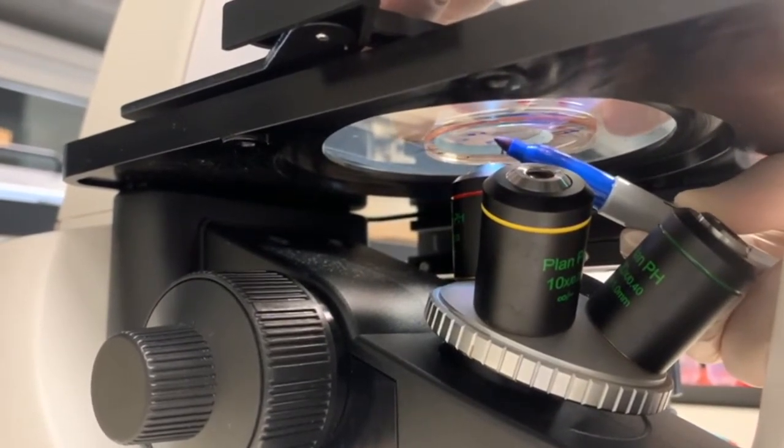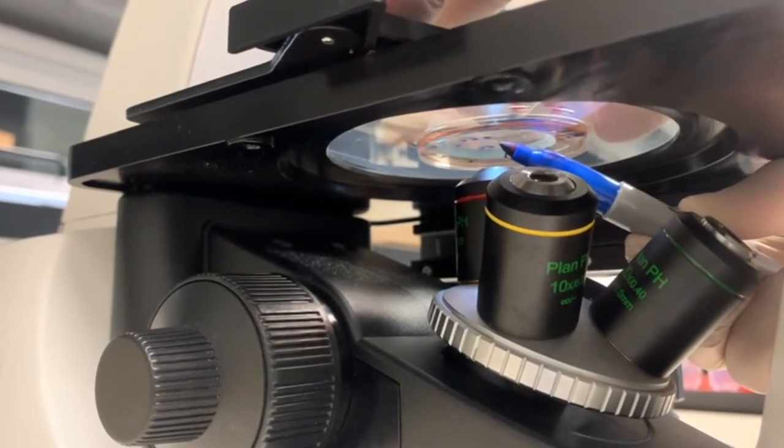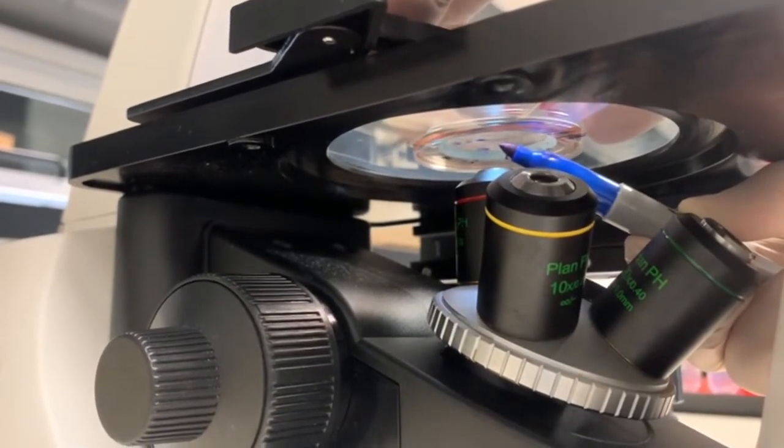Once you've placed your marker under the dish and are able to see the shadow of the marker, use it to mark the differentiated regions.